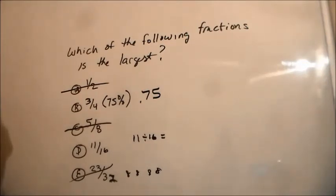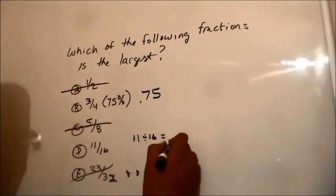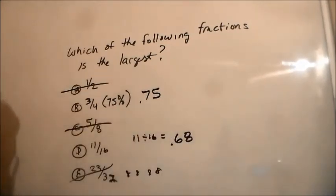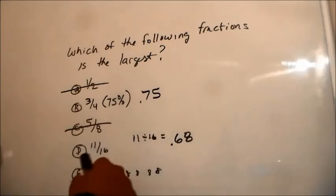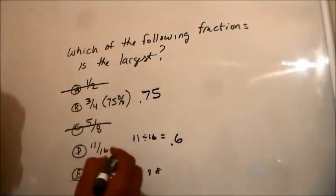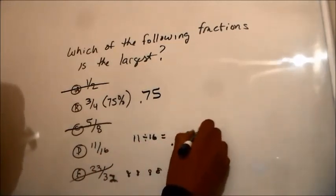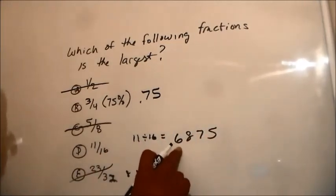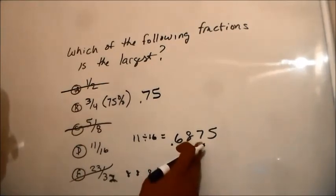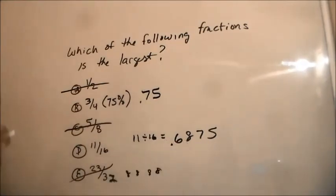11 divided by 16 will give us our decimal point that we need. I don't know why my calculator keeps acting retarded, but here we go. It keeps going out. So 11 divided by 16 equals .68, .68, or .69. I'm going to round it up because it's .6875, so I have my six and my eight. I'm going to round it up, so .69.